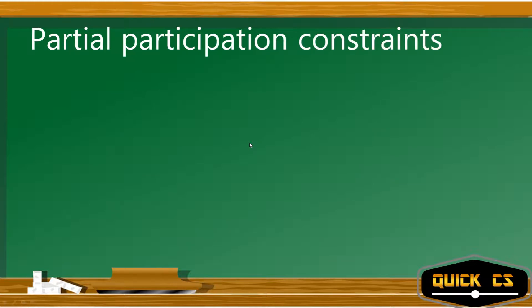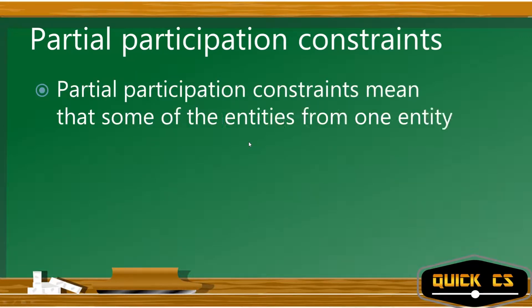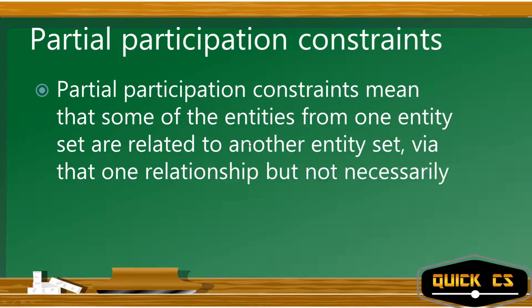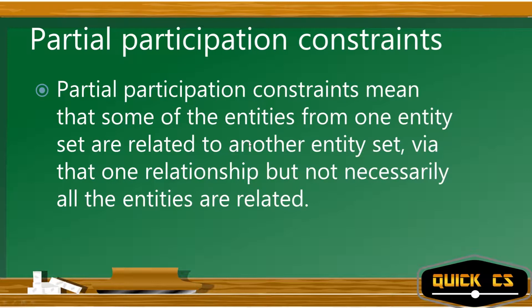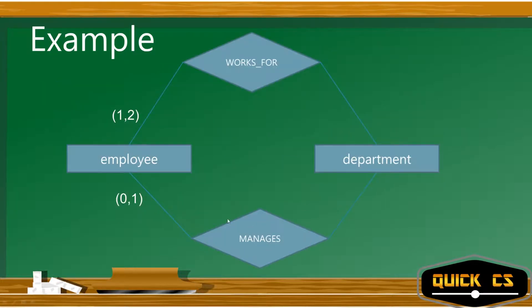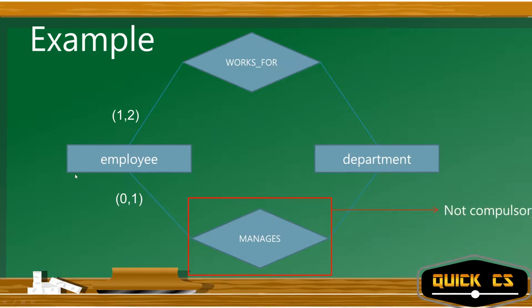Partial participation means that some of the entities from one entity set are related to another entity set via that relationship, but not necessarily all entities. For example, in 'employee manages department,' not every employee needs to be a manager. Managing a department is not compulsory, but if an employee is managing, they can manage at most one department — hence the notation '0,1'.